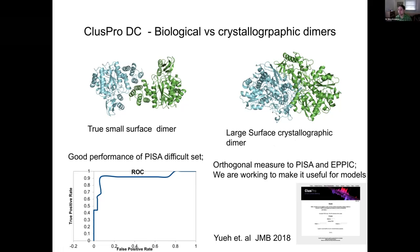There are details in this publication. You can use it with the server. Our experience with this is obviously PISA and EPPIC is much faster. You just need to look at the single conformation. If they agree, then it's okay. But if there is a disagreement, ClusPro DC can be a tiebreaker to see a different angle. It's interesting that we see that such an approach can be adapted to models and can tell you, if you have some interface based on the homology model, which one is more likely and things like that. We are working on the server mode for this.